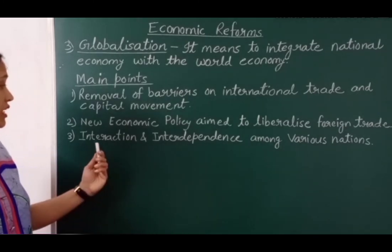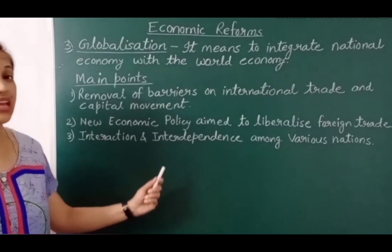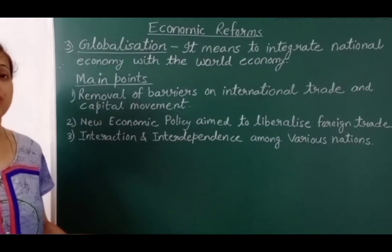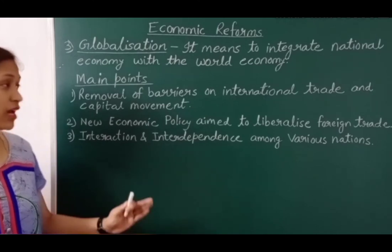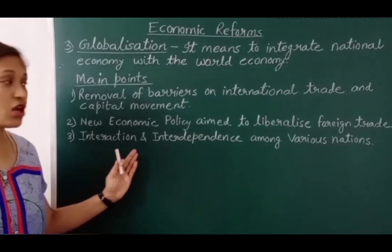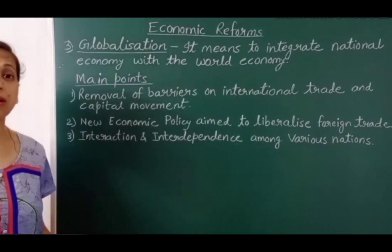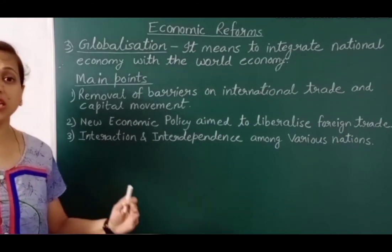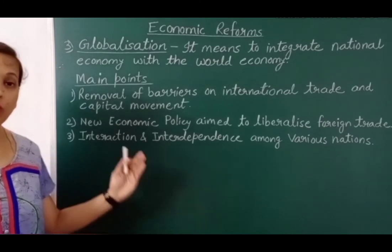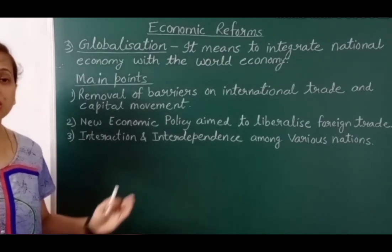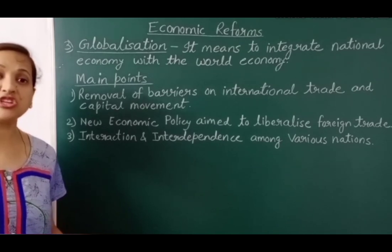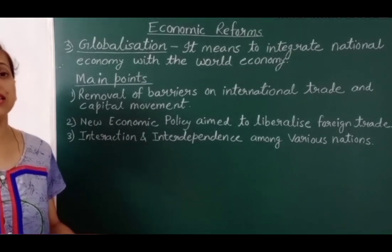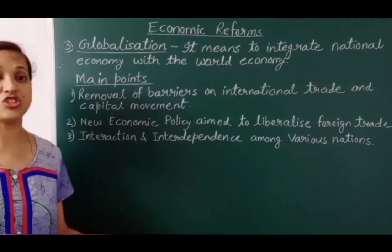The third is interaction and interdependence among various nations. Globalization ka aim hota hai ki vishwa ke sabhi desh ek dusre ke saath interact kare aur interdependent bhi hon. Iska matlab ek desh ki zaroorat vishwa ke dusre desh poori karenge. Globalization ke karan, goods and services, capital, information technology, aur people aasani se ek desh se dusre desh mein ja sakti hain.